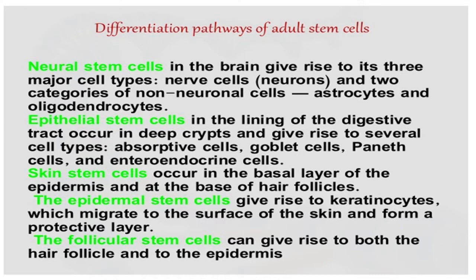These are epithelial stem cells. In skin, you can see that there are five different types of cells: stratum germinativum, Malpighian layer, keratin type cells, basal cells, and granulosa cells. These are epidermal stem cells and follicular stem cells.